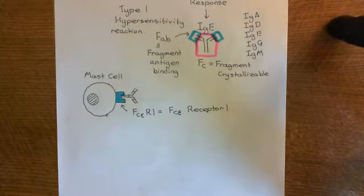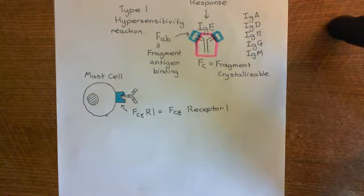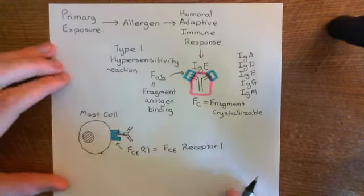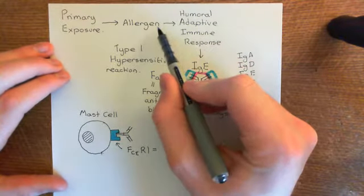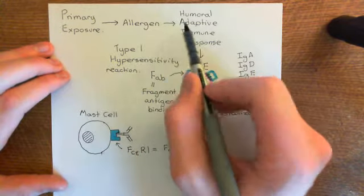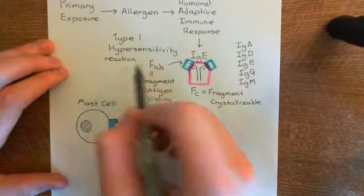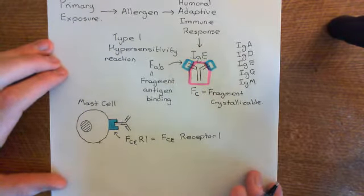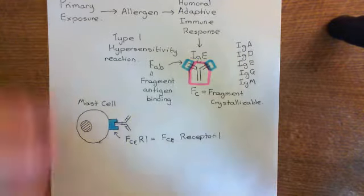So far we've seen a type 1 hypersensitivity reaction where, when the person was initially exposed to the allergen, they initiated a humoral adaptive immune response. That is the point at which this goes wrong. You should not initiate a humoral adaptive immune response against this allergen — this is an innocuous protein. It's called a type 1 hypersensitivity reaction because the immune system is launching a response against something that really should not stimulate an immune response.